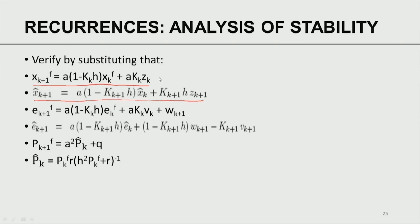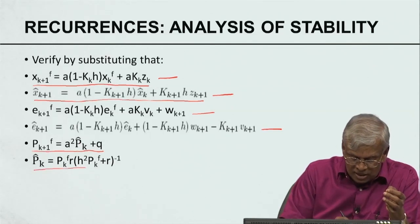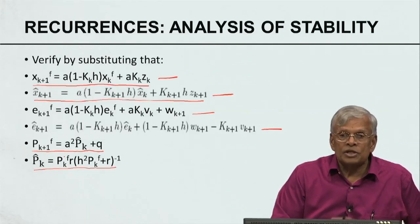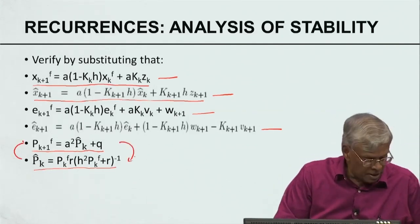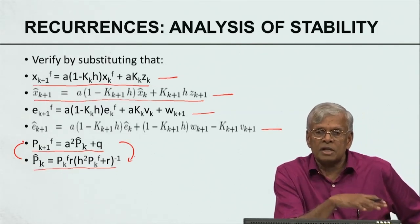By substituting these, I get one recurrence for the forecast and one recurrence for the analysis. If I have a forecast I can compute the forecast error; if I have analysis I can compute the analysis error. I also have the expression for the forecast covariance in terms of analysis covariance: the forecast covariance is A² times the analysis variance plus Q. Again the analysis variance depends on the forecast variance. Substituting each other, I can relate forecast at time K+1 to forecast at time K, and analysis at time K+1 to analysis at time K.